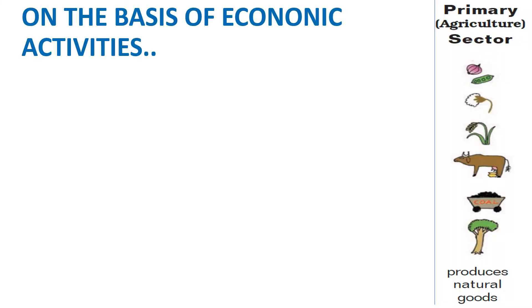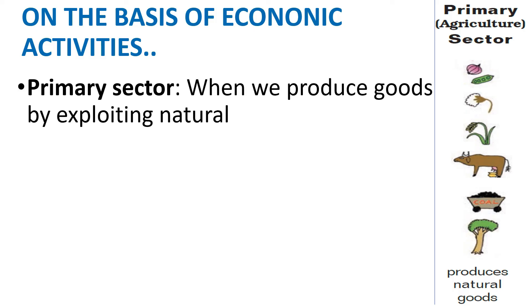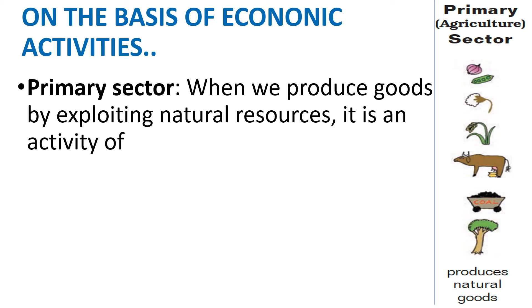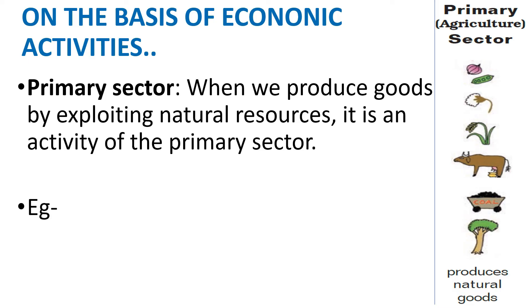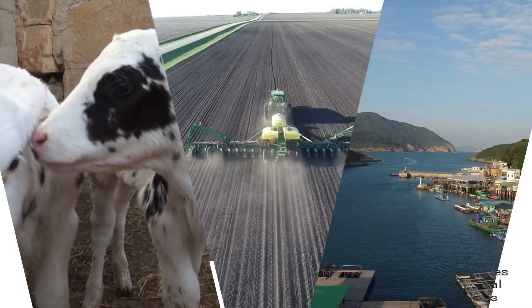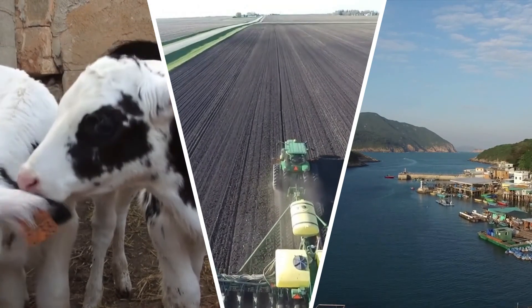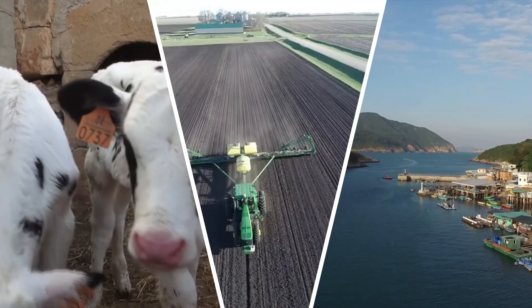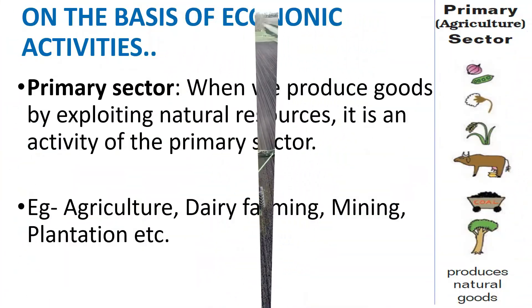Now let us come to the primary sector. When we produce goods by exploiting natural resources, it is an activity of the primary sector. Agriculture, dairy farming, mining, plantation, etc. are examples. The primary sector produces natural goods.